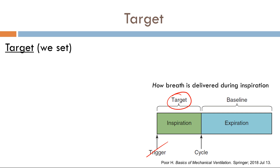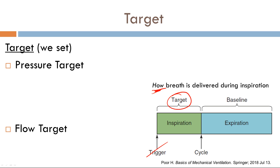What is target? Target is how a breath is delivered during inspiration — is it delivered fast or is it delivered slow? The target variable is delivered in one of two ways: you can either have a pressure target or a flow target. You cannot have a volume target because volume doesn't designate how a breath is delivered. Volume over time is flow, so technically you cannot have a volume-targeted mode.